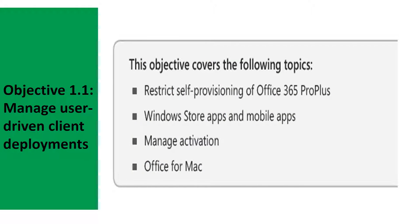Objective 1.1: Manage User Driven Client Deployments. One of the great advantages of Office 365 is that it provides end users with the opportunity to perform self-service deployment of software to their own devices. While this has definite advantages, empowering users to this degree can also lead to problems, such as users exceeding their allocation of Office 365 Pro Plus licenses. This objective deals with how you can restrict self-provisioning of Office 365 Pro Plus, Windows Store Apps and Mobile Apps, and how to manage and revoke activation, as well as Office for Mac.